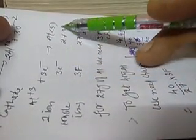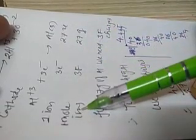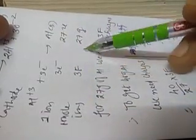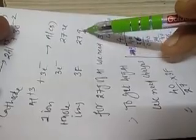If we take one mole of ions, then we need three Faraday charges and we will get 27 grams. But in the question, if you look at, we need 40 grams of aluminum.